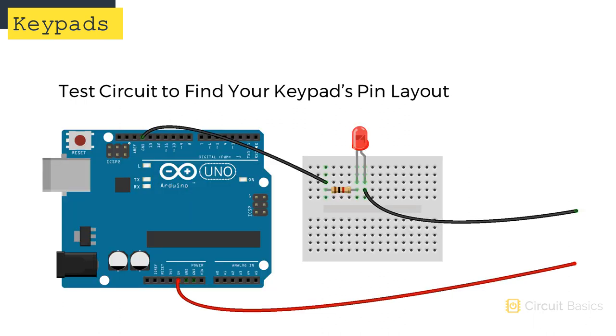First, you'll need to build a test circuit. You can use the conductivity function on a multimeter for this, but if you don't have one, you can connect an LED and a current limiting resistor to the Arduino like this. These black and red wires will be your test leads.